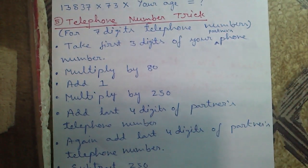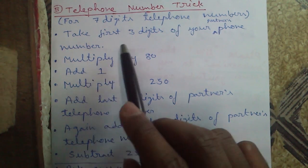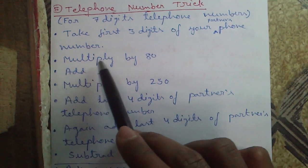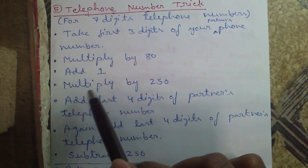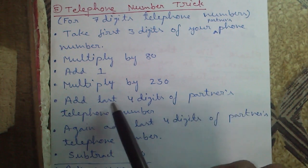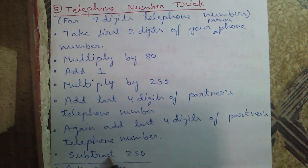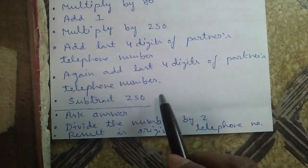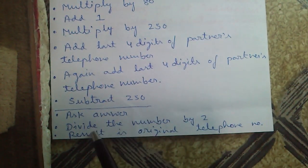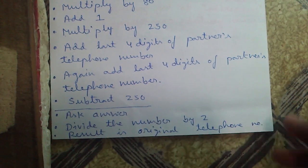The last trick is the telephone number trick, applicable for any 7-digit telephone number. Take the first three digits of the phone number, multiply by 80, add 1, multiply by 250, add the last four digits of the telephone number, add the last four digits again, then subtract 250. Ask the result from your partner, divide by 2, and you get the original telephone number.